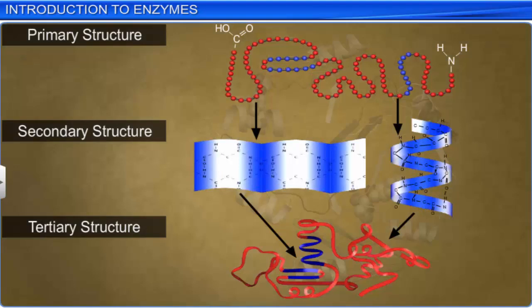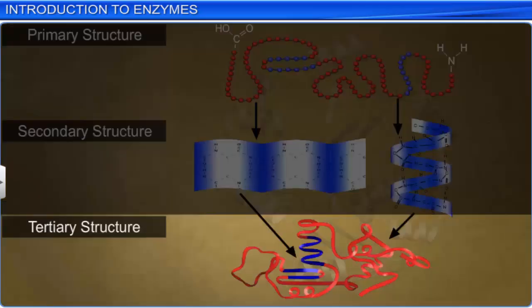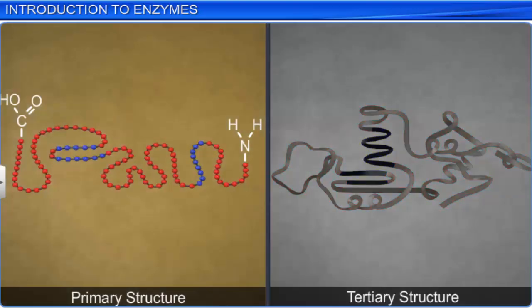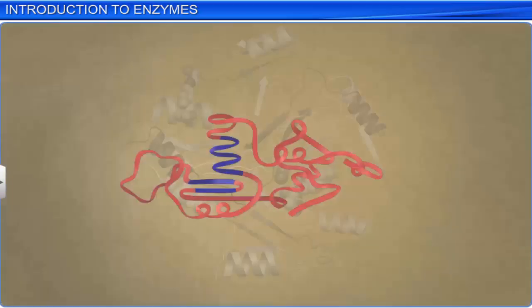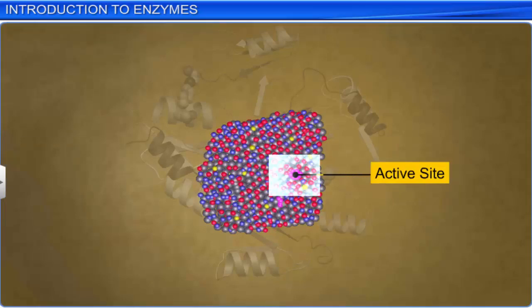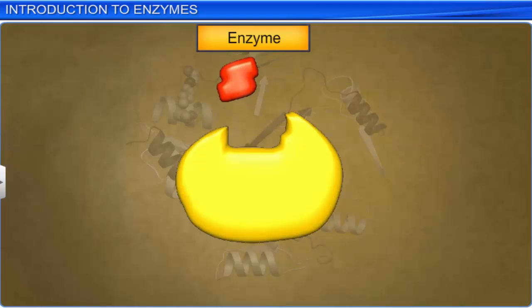Just as with proteins, enzymes have a primary, secondary, and tertiary structure. While the primary structure is an amino acid sequence, the tertiary structure folds and crisscrosses on itself, creating many crevices or pockets. One of these pockets is called the active site. A substrate fits into this active site of the enzyme and enables it to catalyze reactions at a high rate.